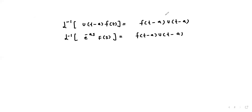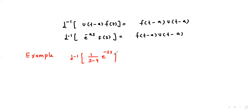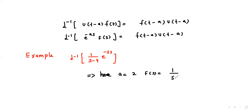We can now solve two examples to understand this concept. For example, find the inverse Laplace transform of the function 1/(s - 4) · e^(-2s). We will use the formula we just derived.